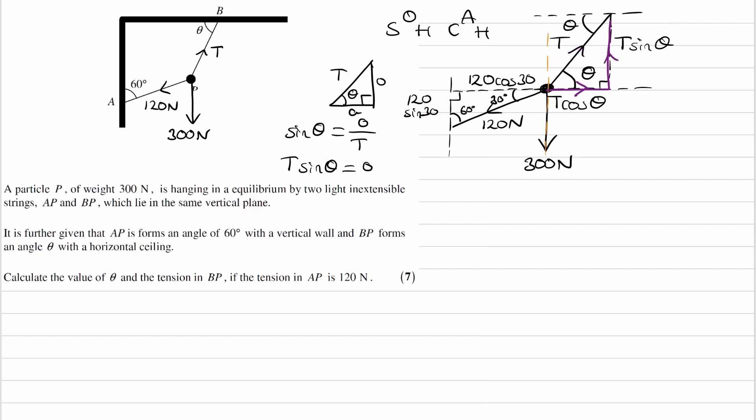And then for the 120 newton force, for the components of that, the 120 cos 30 goes towards the left, the sine 30 part goes downwards, and those two will add up to make this 120 vector.